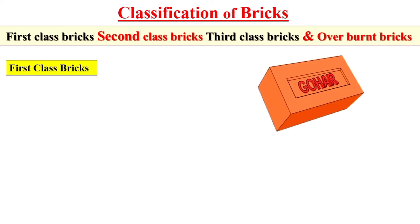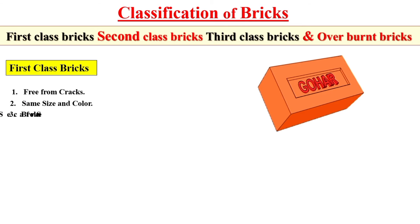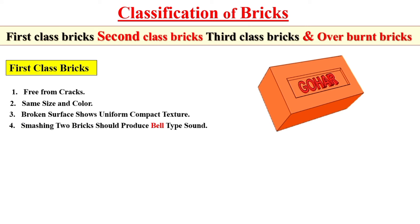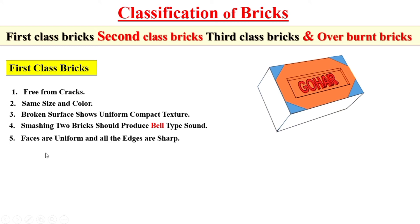First, let's look at first class brick. The first class brick is free from cracks — you will never see any cracks on the surface. First class bricks have the same size and same color. The broken surface of the first class brick shows a uniform compact texture. When two first class bricks are struck together, they should produce a bell-type sound.